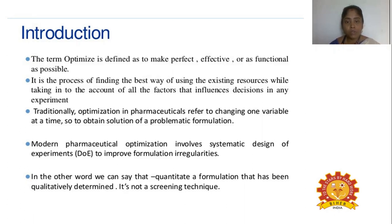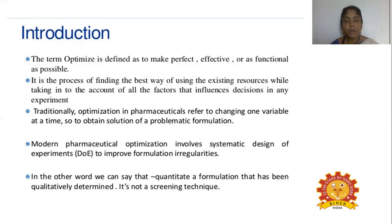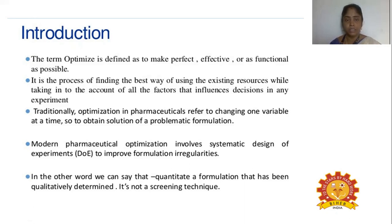In the case of pharmaceutical optimization, it refers to changing one variable at a time so as to obtain a solution for a problematic formulation — what solutions we are going to arrive at for that particular problematic formulation.